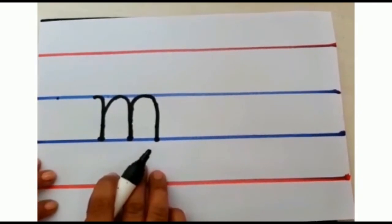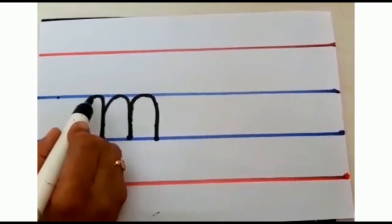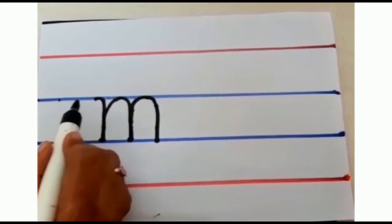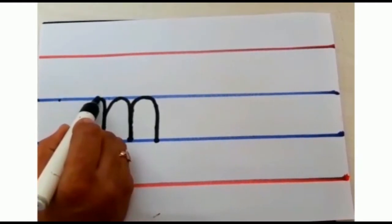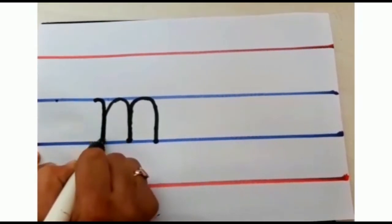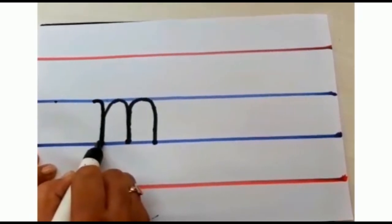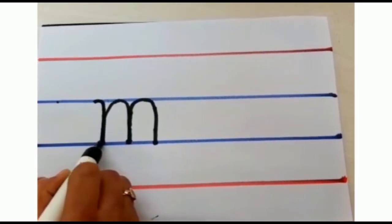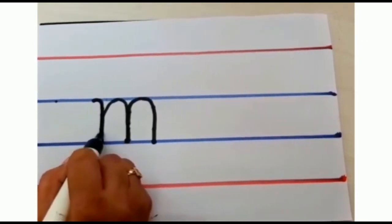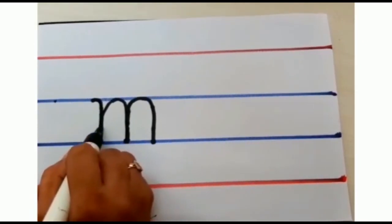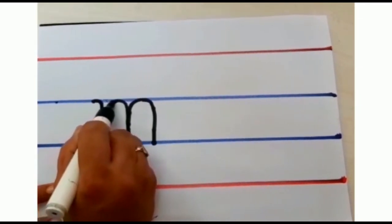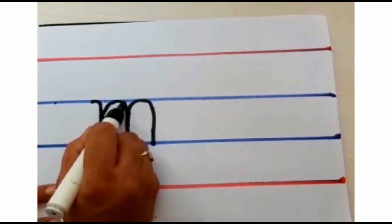See one more time children how to write small m. Start from the second blue line. Make a small curve, come down, touch the third blue line. Go up again on the same line. Touch the blue line.